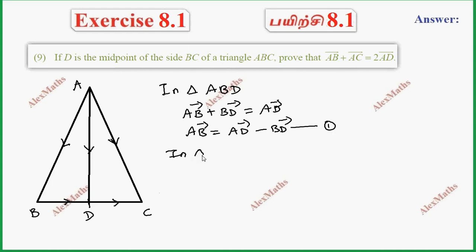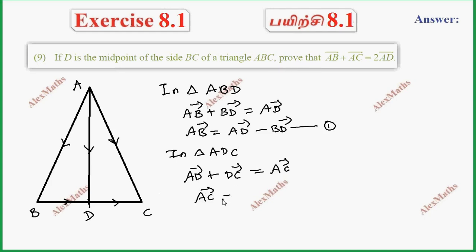Now we have triangle ADC. AD vector plus DC vector equals AC vector. So AC vector equals AD vector plus DC vector. This is the second expression.